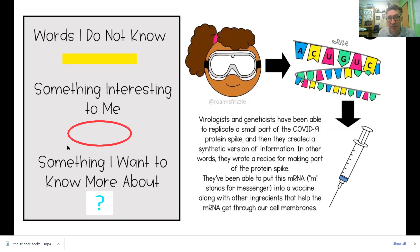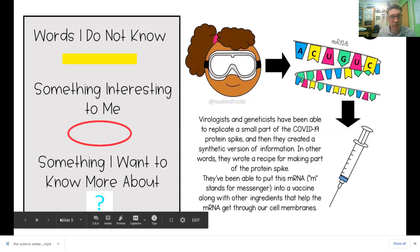Virologists and geneticists have been able to replicate small chunks of COVID-19 protein spike and then create a synthetic version of that information. In other words, they wrote a recipe for making part of the protein for COVID-19 spike. They've been able to put the mRNA into a vaccine, just the RNA, not the whole virus, along with other ingredients that help the RNA get through the cell membranes in your cells.